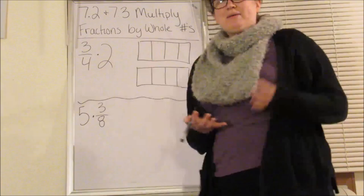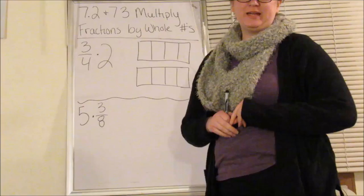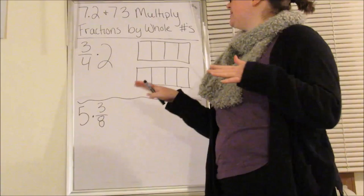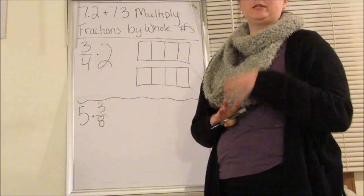Hello my mathematicians. Today we are going to be looking at lessons 7.2 and 7.3. Both of them are about multiplying fractions by whole numbers. The difference between the two lessons is 7.2 is modeling it and then 7.3 is doing the actual multiplication.